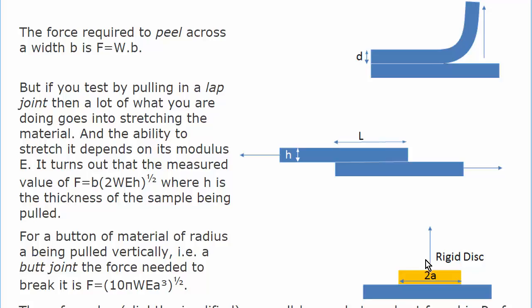And when we do it as a vertical pull as a rigid disk, then the force is 10π work of adhesion times the modulus times this size cubed, square root of all that. So again, the mechanical properties have a big influence on the force required to break a joint.